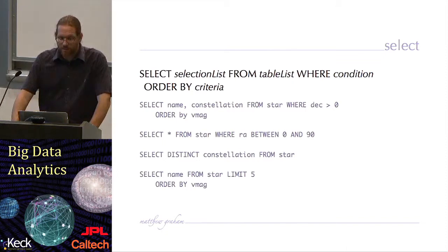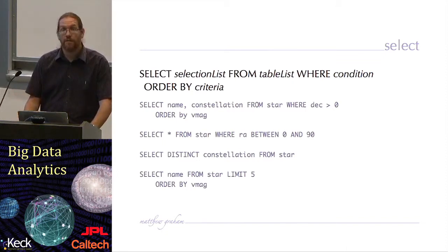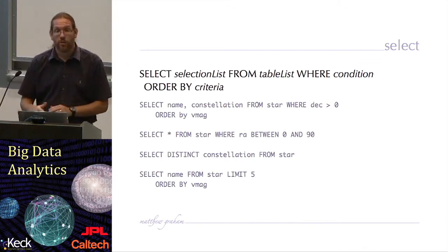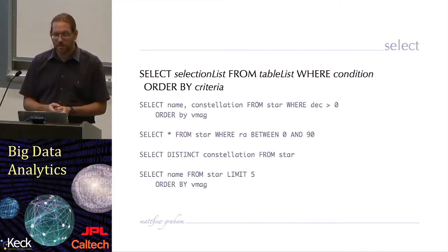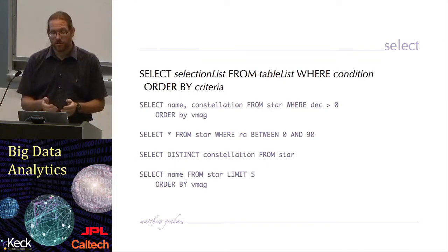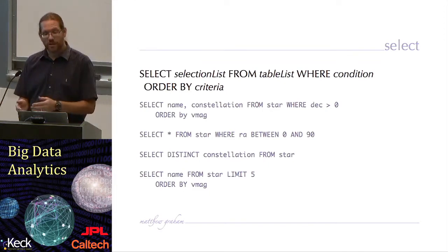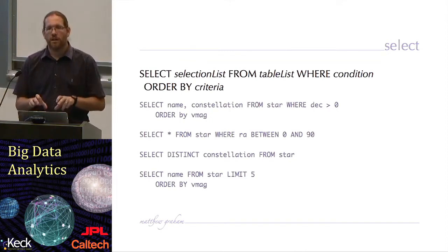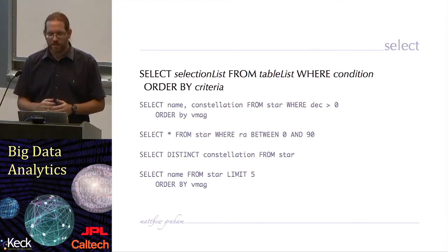If in our table we have information that's repeated and we just want the unique values of that, we can use the distinct keyword before our selection list. So in this case, we're doing select distinct constellation from star, which will return the list of unique constellation values from that table.